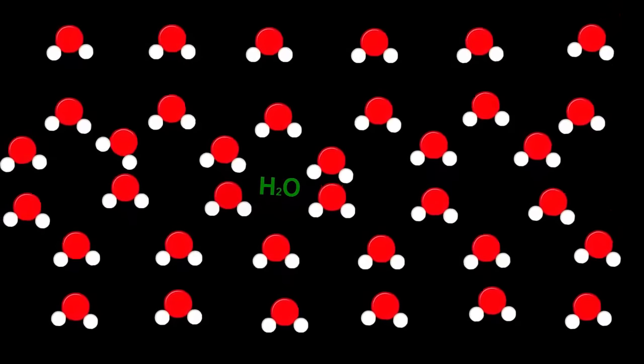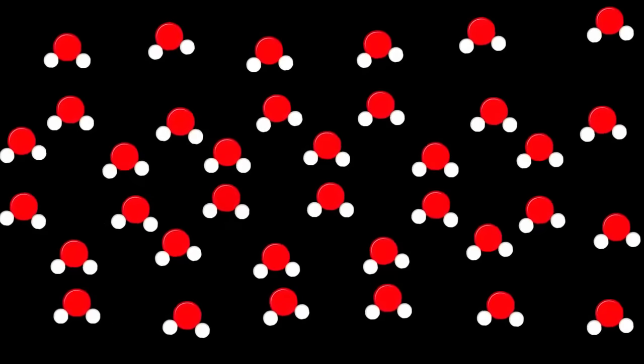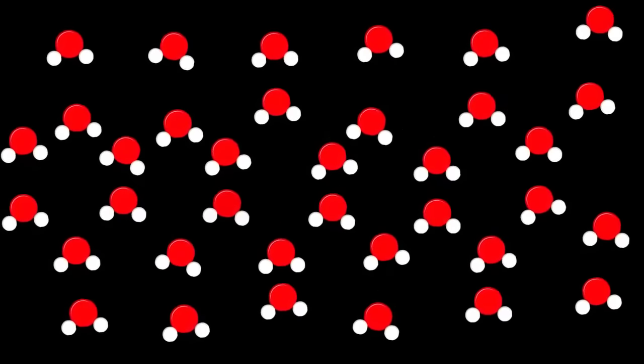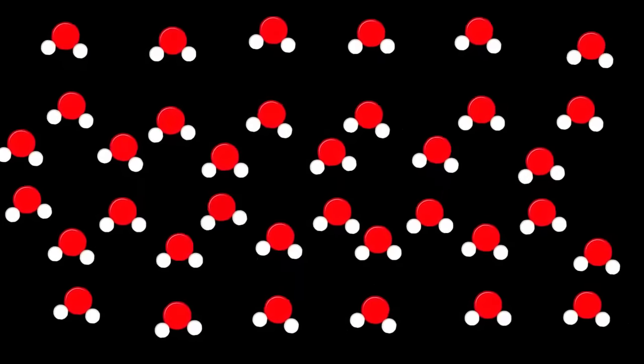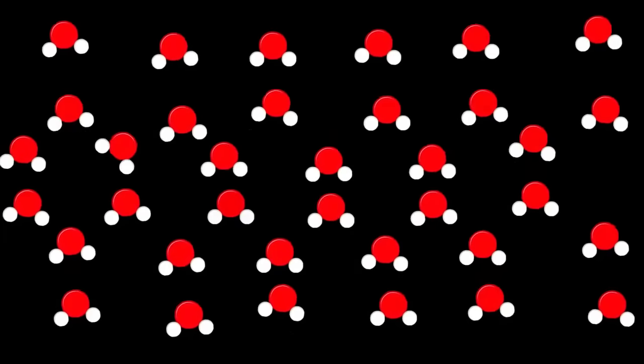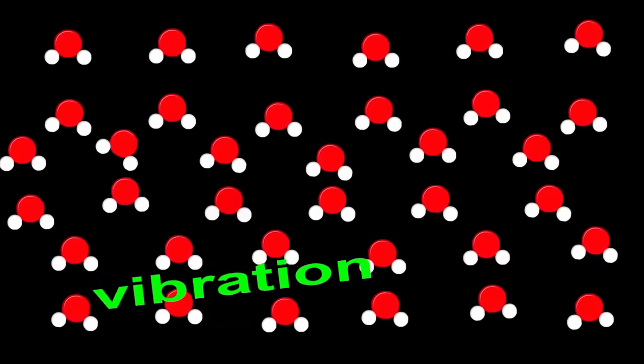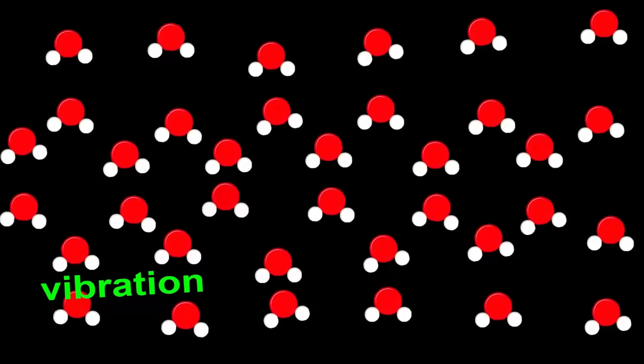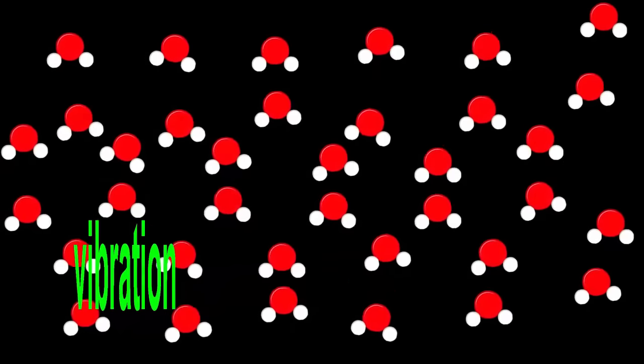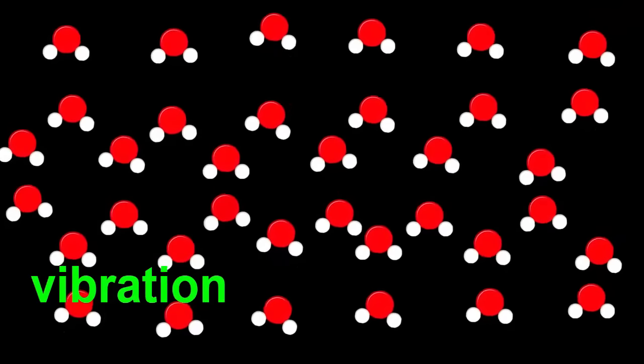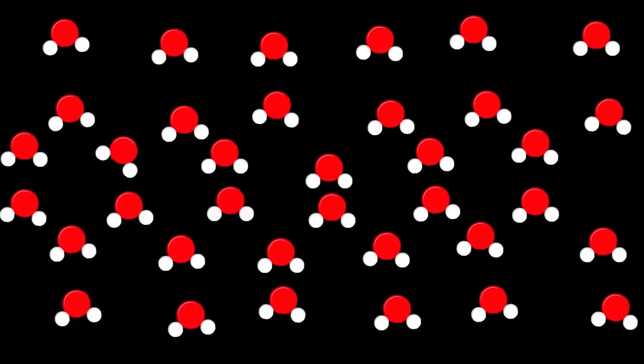The molecules are about as close as they can get and they're stuck in one place. They're still moving but they're moving slowly backwards and forwards around the same point. This is called vibration and it keeps the molecules next to their neighbors. It means that the overall shape is fixed so ice is rigid. It keeps its shape.